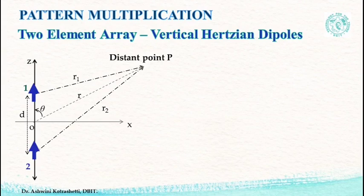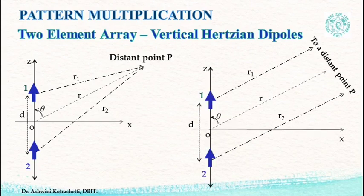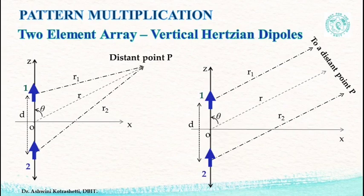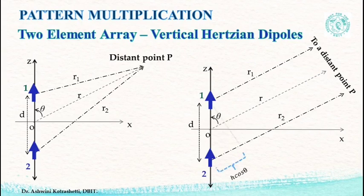r1 and r2 are the paths of radiation from source 1 and source 2 to a distant point P. The distant point P is much farther away from the source, that is it is in the far field of the antenna array configuration. Hence, for a distant observer it looks as if the radiations are in parallel lines. This helps us to apply the far field approximations that we have studied. Let's move on to compute the net electric field.